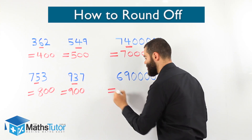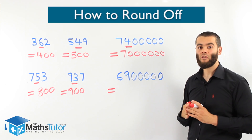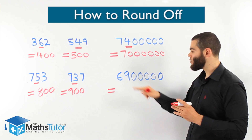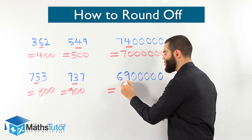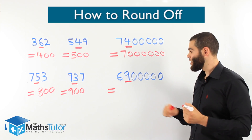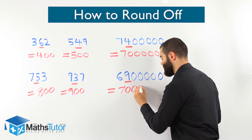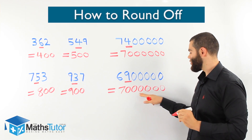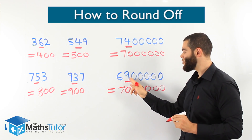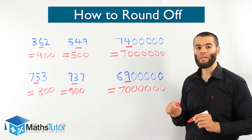Another example — see if you can do this one yourself. We are rounding off to the nearest million. We have 6 million and 900,000. We look for the number on the right of the millions column and we ask: are you 5 or more? Yes — it is a 9, so it is larger than 5. That means we can push up. So that becomes 7 million. The 9 has enough muscles; it's 5 or more, and it pushed the 6 up so it became 7 million. 6 million and 900,000 was rounded off to the nearest million as 7 million.